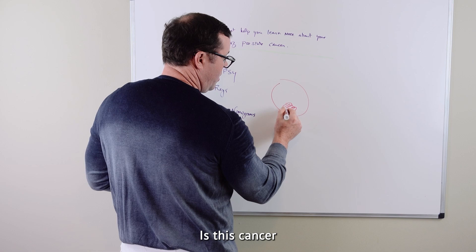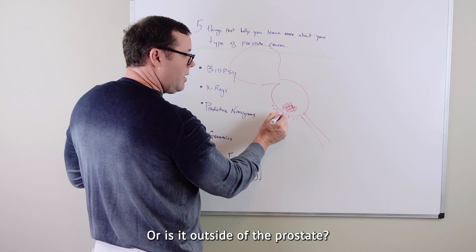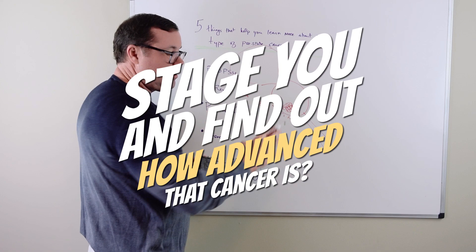Most men get staging x-rays for prostate cancer. And the goal of these x-rays is to see is this cancer that's growing in the prostate, is this cancer just in the prostate or is it outside of the prostate? Is it in the lymph nodes? Is it in the bones? Has it spread distantly? And x-rays are what are used to stage you and find out how advanced that cancer is. Again, is it in the prostate or is it elsewhere?